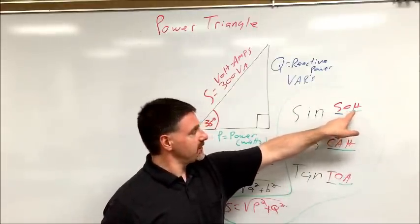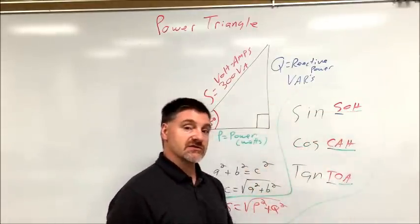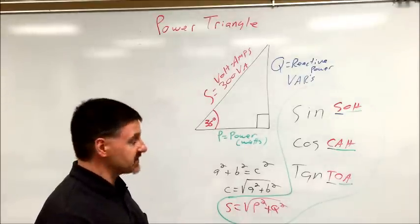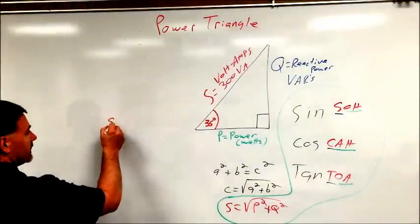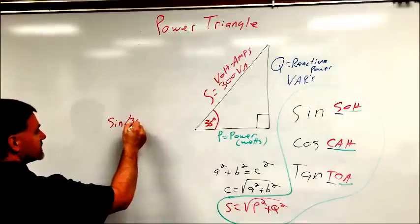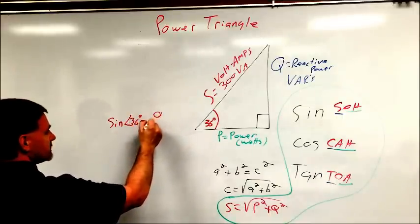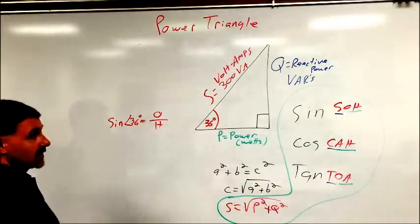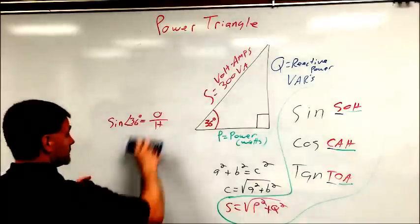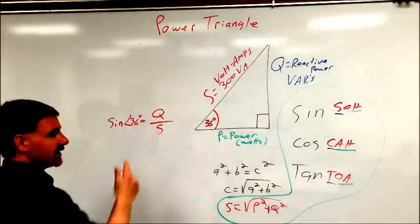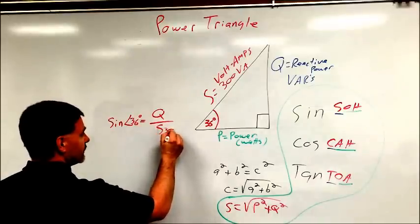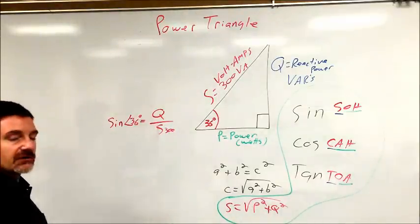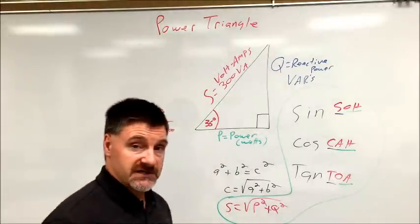The angle, the hypotenuse, and the opposite side: sine. So sine will help us to get there. How would that look in solving it? Sine of angle 36 equals the opposite over the hypotenuse, or in our case, Q over S. We know S equals 300, but I need to solve for Q, so we have to get Q by itself.